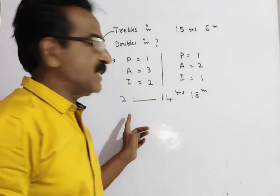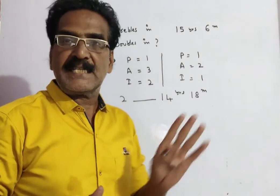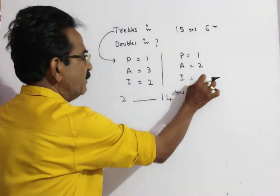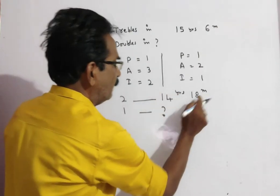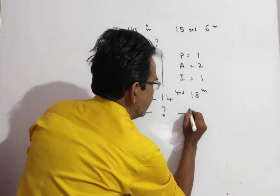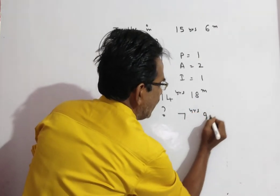Now, for getting 2 rupees interest, it requires 14 years, 18 months. For getting 1 rupee interest, half of this. So half of this means 7 years, 9 months.